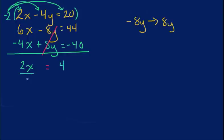So when I solve for x, I'm left with 2x equals 4, so I divide both sides by 2. And x, since these cancel out, x equals 2.